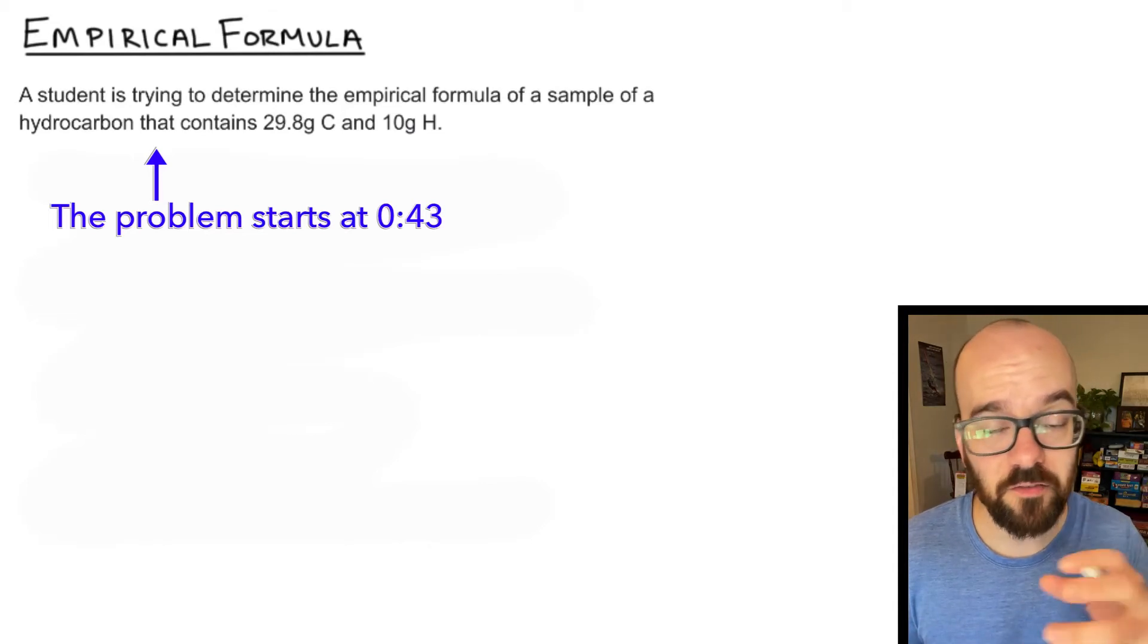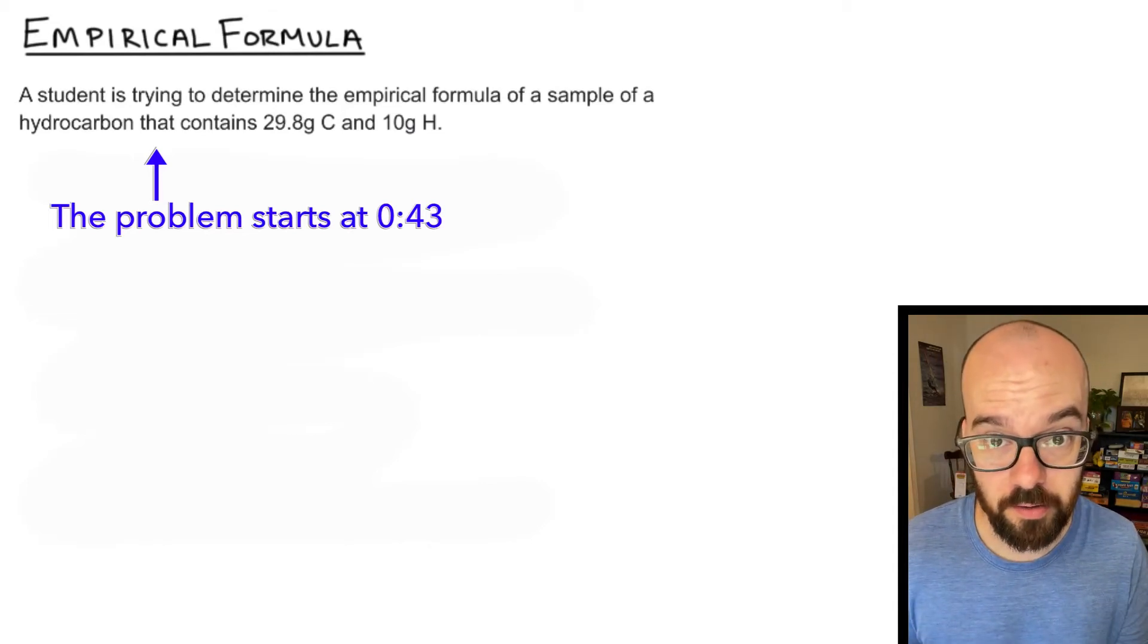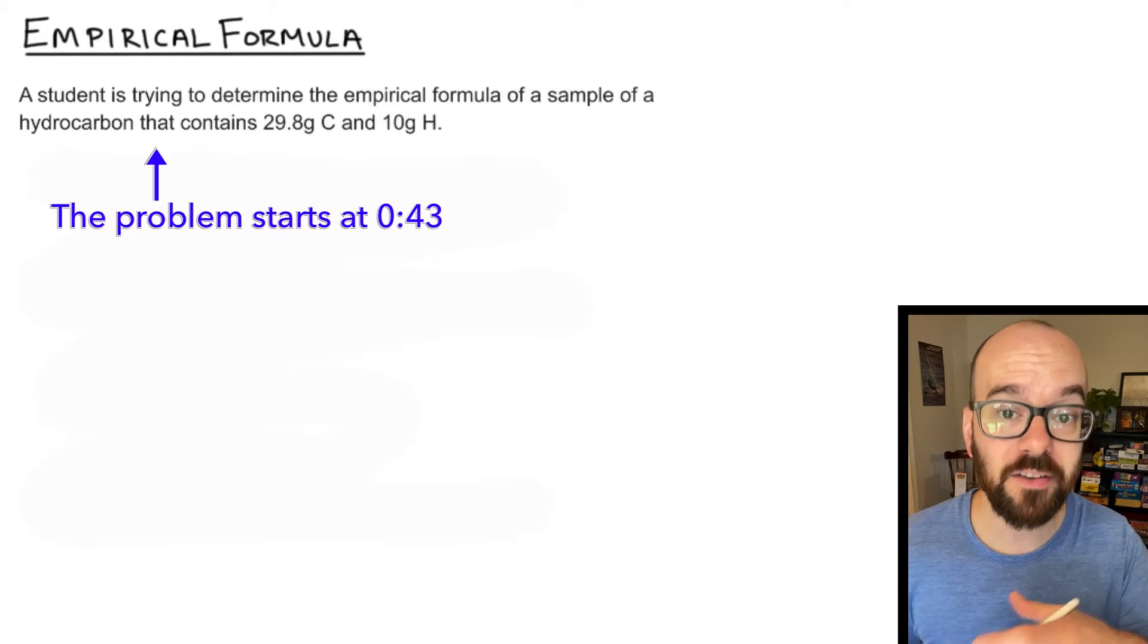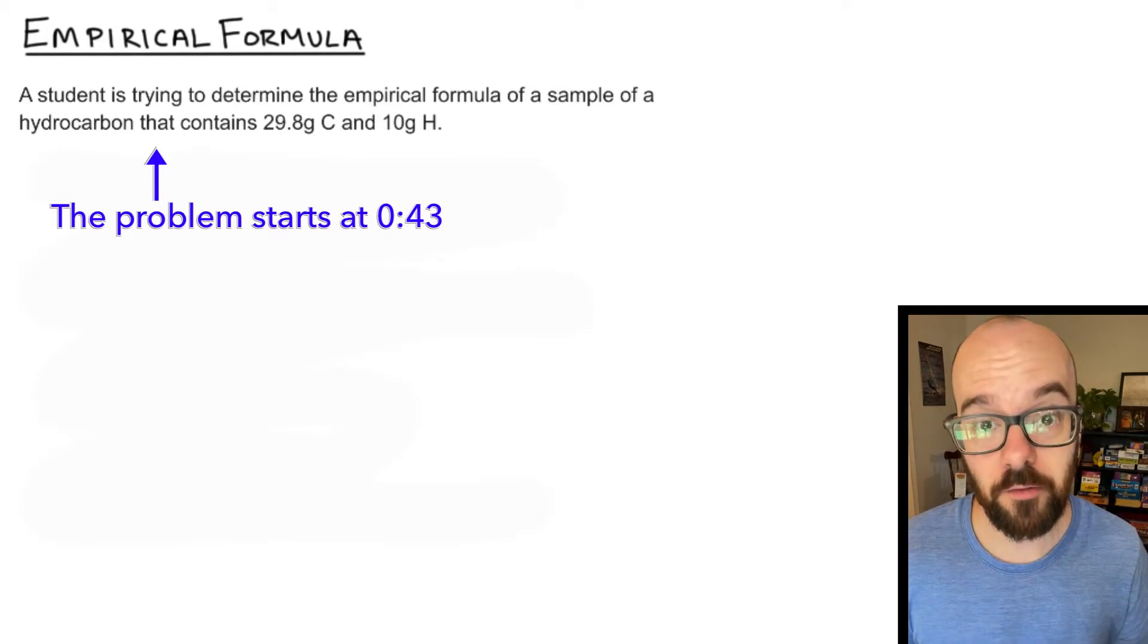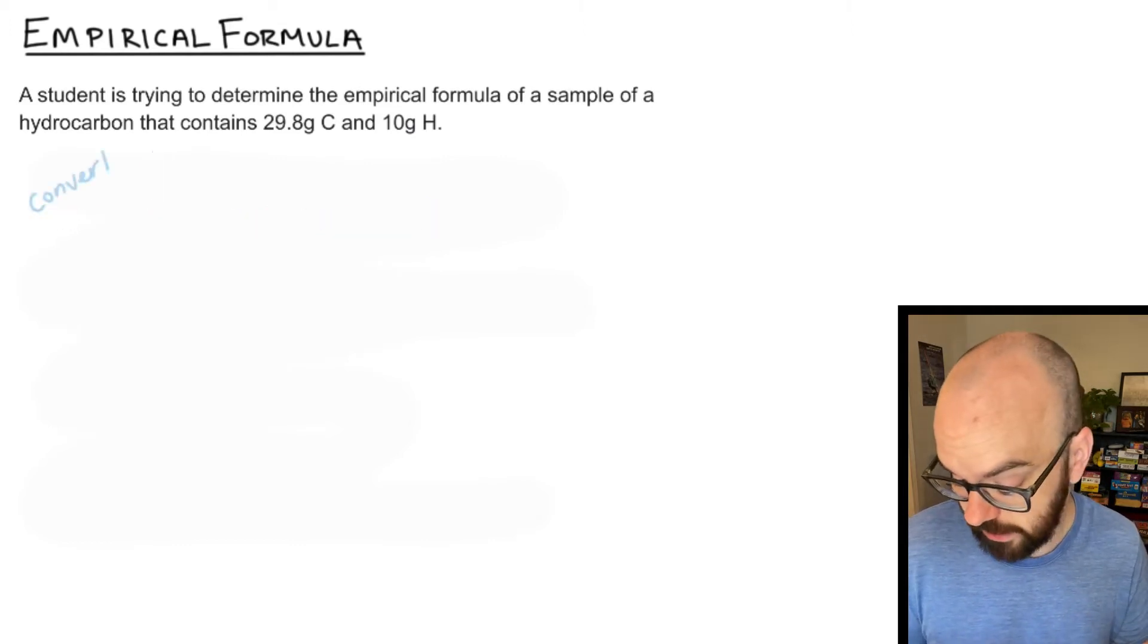In this video we're going to start with the mass of different elements in a compound and we're going to convert from mass to the empirical formula of that compound. Whenever we go from the mass of the elements to the empirical formula we're going to do that in three steps.